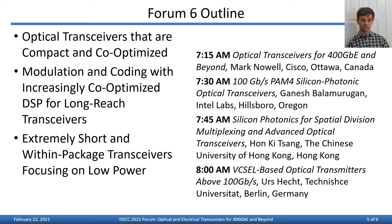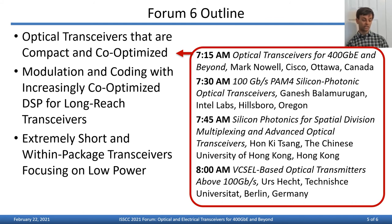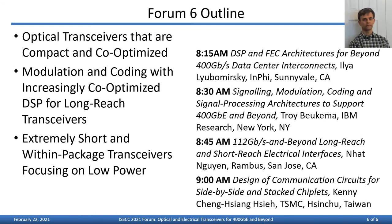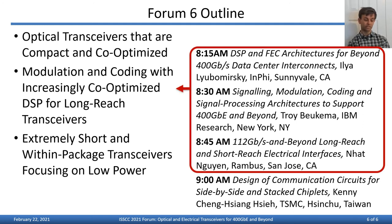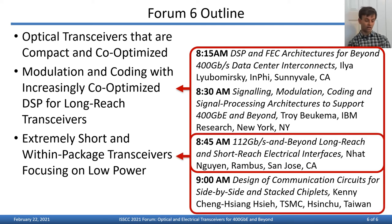The first four presentations are from experts at Cisco, Intel, the Chinese University of Hong Kong, and the Technische Universität in Berlin, all generally relating to optical transceivers that are compact and co-optimized. The next two speakers are from Inphi and IBM Research, focusing on modulation and coding methods for 400 gigabit per second ethernet and beyond. The seventh speaker is from Rambus and discusses both modulation methods for 400 gigabit per second ethernet systems and very low power transceiver implementations. Our final speaker is from TSMC and will discuss the design of communication circuits for side-by-side and stacked chiplets. Please join us for what I'm sure will be an excellent forum.